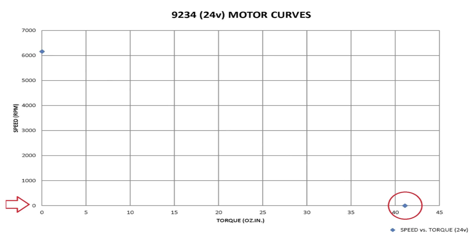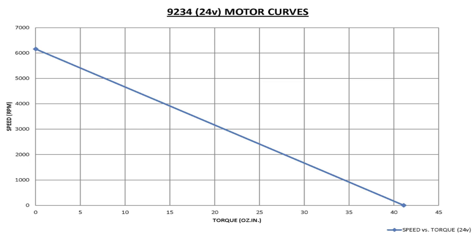This is a theoretical value and a motor should never be placed in this condition since it will quickly result in an irreversible failure. With our two points, we can now draw the speed torque curve. This line defines the output performance of our motor.